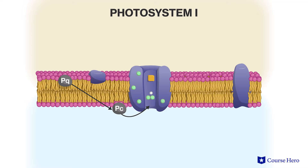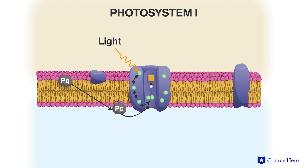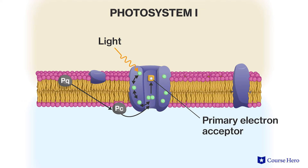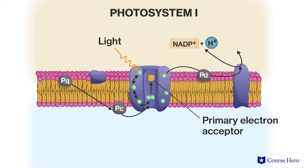In photosystem I, a process similar to that in photosystem II captures light energy and transfers it to a primary electron acceptor. The reaction center chlorophyll molecules in photosystem I are referred to as P700, because they most effectively absorb light having a wavelength of 700 nanometers. Light energy is transferred to the reaction center, exciting an electron in the P700 pair of chlorophyll molecules, which gets passed on to the primary electron acceptor. P700 is now referred to as P700+, and it can accept electrons that come from photosystem II. The excited electrons from the primary electron acceptor of photosystem I are then passed in a series of redox reactions to NADP+, which also takes hydrogen ions from the stroma to make NADPH. NADPH will be used later in the Calvin cycle.